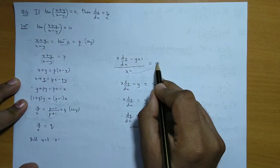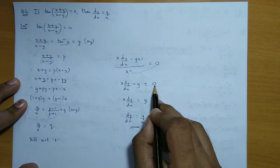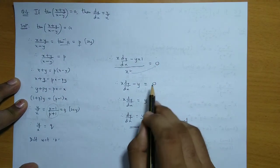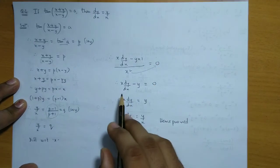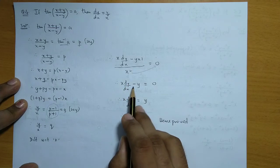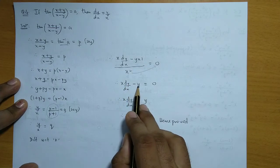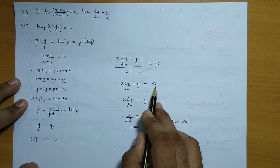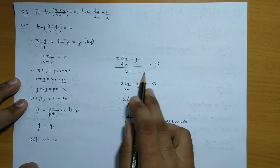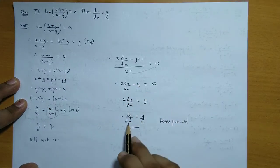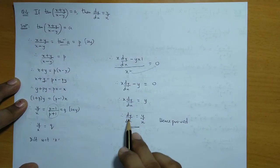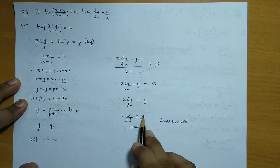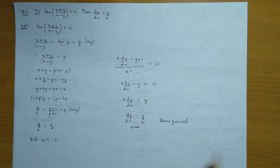Multiplying both sides by x square, since x square times 0 is 0, the left hand side becomes x dy/dx minus y, equal to 0. Taking the y term to the right hand side, we get dy/dx = y/x. Hence proved.